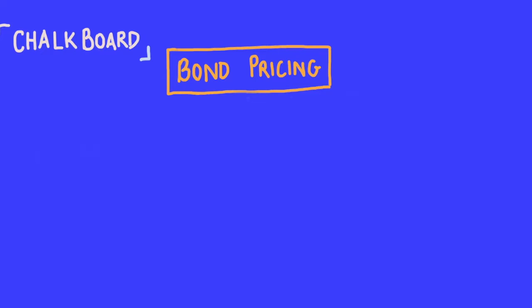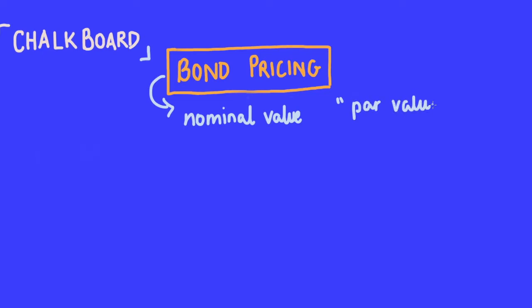Welcome back to Chalkboard Tutorial. Let's have a look at bond pricing and how it works. When a bond is traded, it is traded at its nominal value, which is simply the value on the bond certificate. This nominal value is also commonly referred to as par value or face value — all three terms mean the same thing.